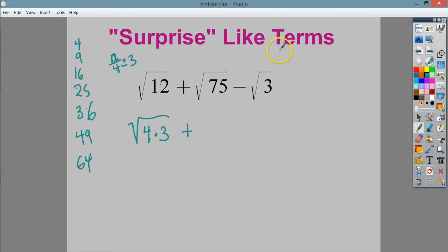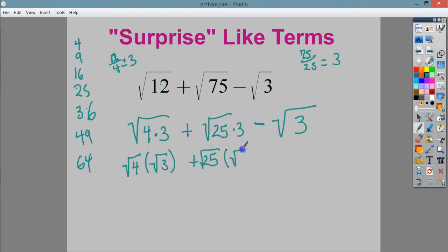For 75, well, 25 goes into it, so I'm going to do 75 divided by 25, and I get 3. So that means 25 times 3 gives me 75. I'll write it as square root of 25 times 3, and then I'm going to end up with minus the square root of 3. From here, I'm sort of going to treat these as their own separate sections.